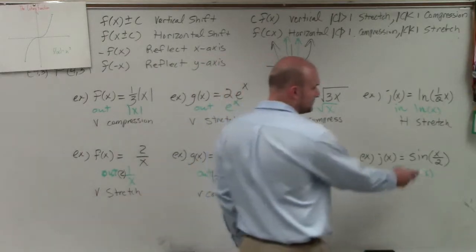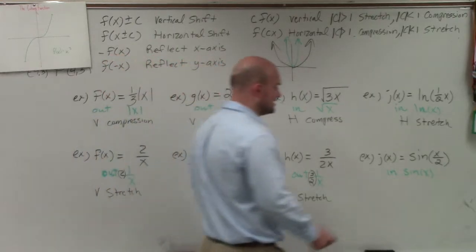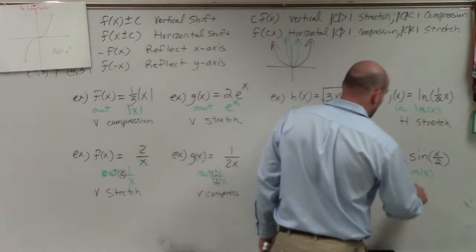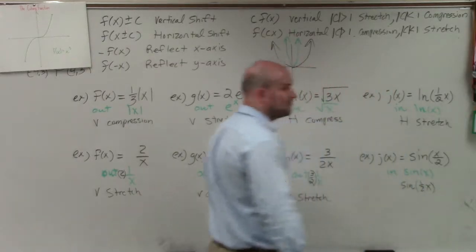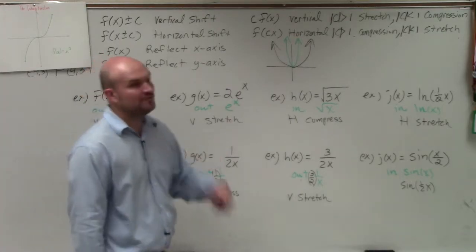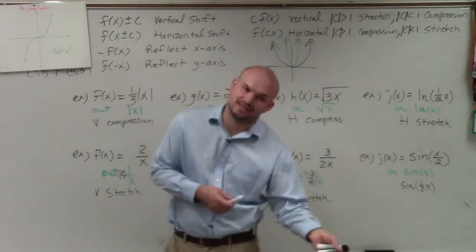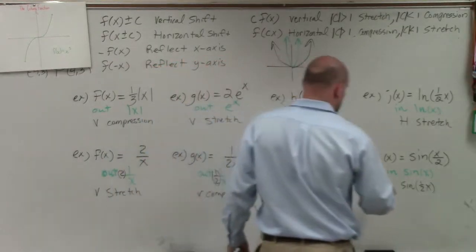And then this last one, this one confuses a lot of students. And we're going to get into this much more later in the year. But you can rewrite this as sine of 1/2 times x. Because what's 1/2 times x? x over 2. It's the same thing. Right? So therefore, I'm multiplying by 1/2 inside the function. 1/2 is less than 1, so it's a horizontal stretch.